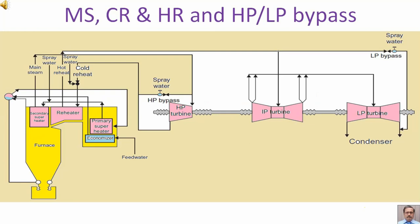This diagram shows main steam, cold reheat steam, and hot reheat steam, and the HP LP bypass system. We have already discussed main steam, cold reheat steam, and hot reheat steam in a previous lecture. In this lecture, our main attention shall be on HP bypass and LP bypass.